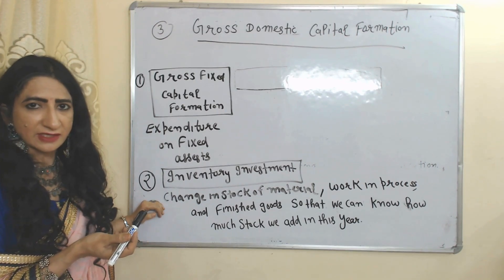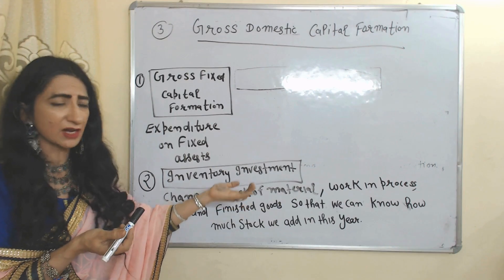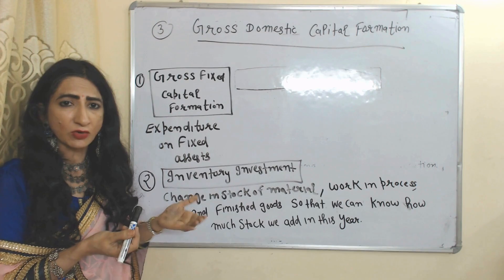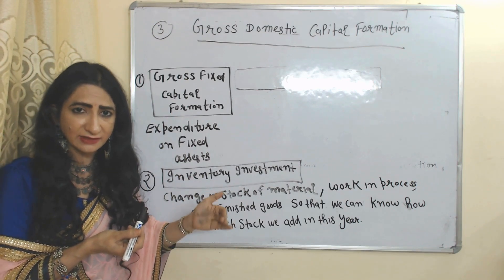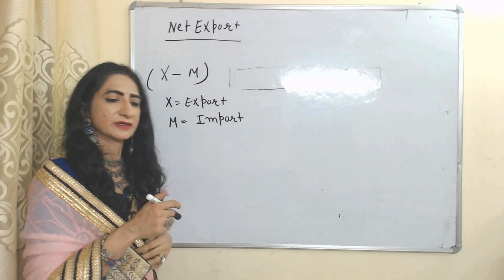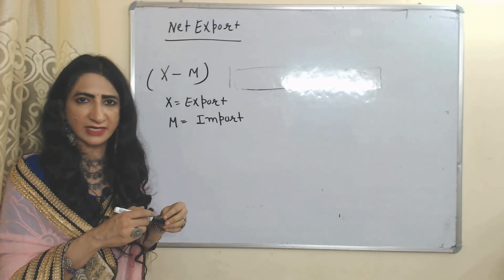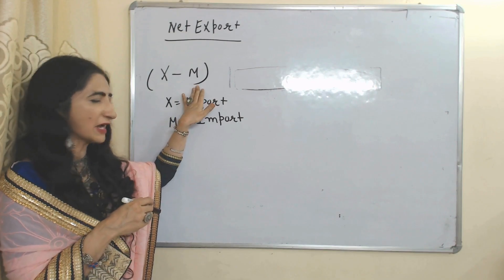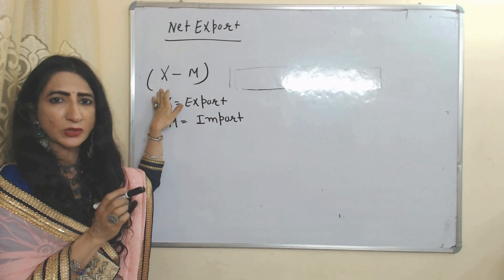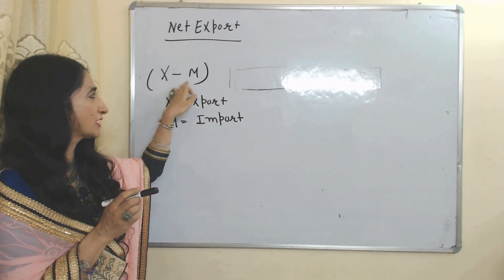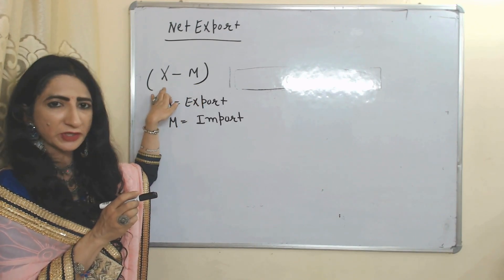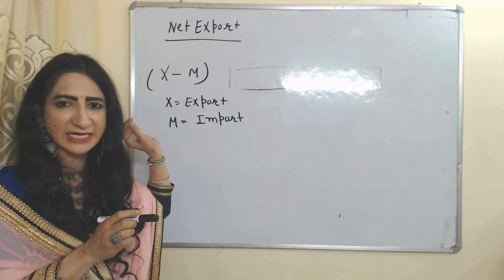Inventory management measures the change in stock of material, work in progress, and finished goods, so that we can know how much stock we added in this year or how much expenditure we incurred on stock. The next component is net export. When we subtract imports (M) from exports (X), it becomes equal to net export.